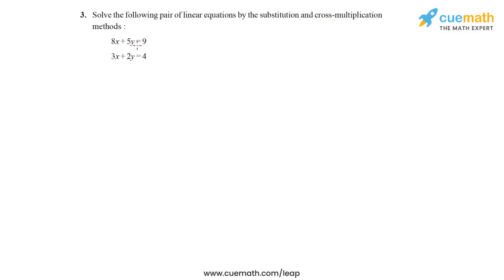In question 3 of this exercise, we have to solve the following pair of linear equations by substitution as well as cross multiplication. So this is the pair of linear equations that we have, and we have to solve this using both substitution as well as cross multiplication. So let's first do it using substitution.